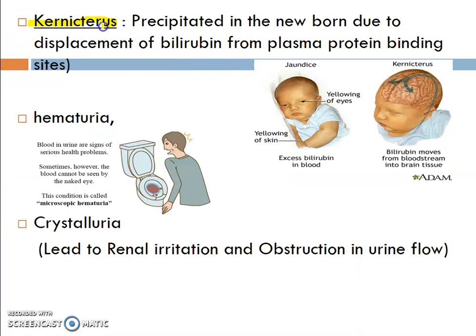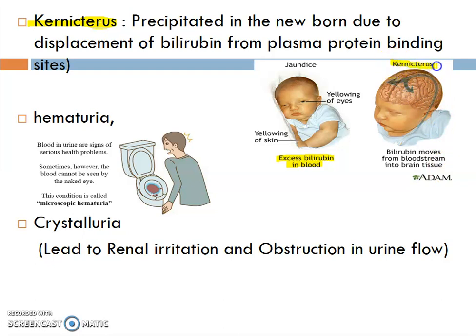Kernicterus is another important side effect, often asked in GPAT-like examinations. It involves precipitation of bilirubin in the newborn baby due to displacement of bilirubin from plasma protein binding sites. When the mother uses sulfonamides, they enter the baby's blood circulation through feeding. The bilirubin then moves from the bloodstream into brain tissue, increasing brain tissue damage. This condition is called kernicterus.